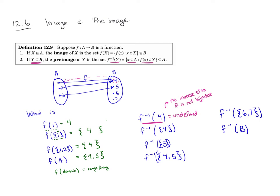But even though it's not bijective, and I can't take the inverse, I can still take the pre-image. So the pre-image of 4 is the set of all things that get mapped to 4. So both 1 and 2 get mapped to 4. So that's the pre-image of 4.